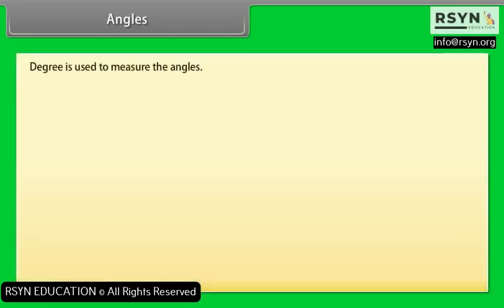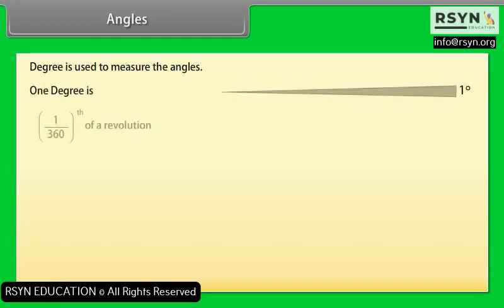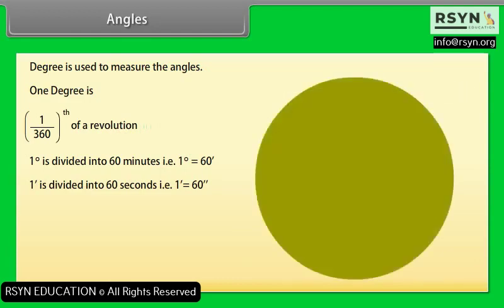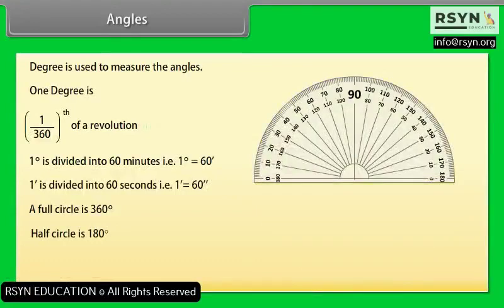How to measure the degree? Degree is used to measure angles. One degree is 1/360th of a revolution. One degree is divided into 60 minutes, and one minute is divided into 60 seconds. There are 360 degrees in one full rotation. A full circle is 360°, and a half circle is 180°.